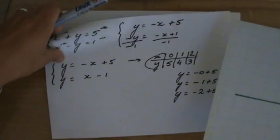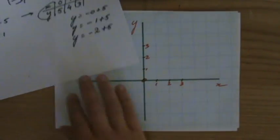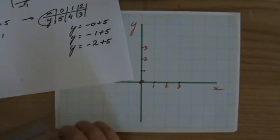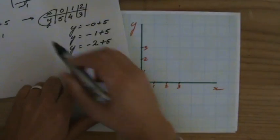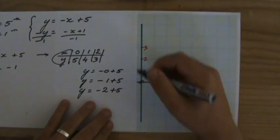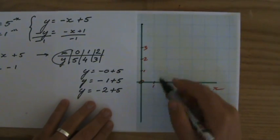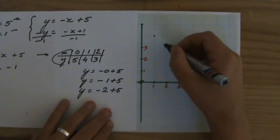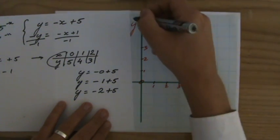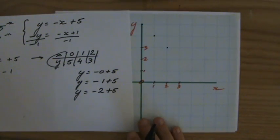The third point is just to check our work. Now let me plot that point already. We have (0,5), that's over there; (1,4), that's over here; and (2,3). All three are lying on one line so I can just draw that.